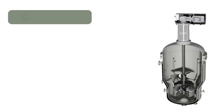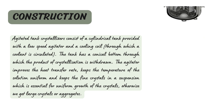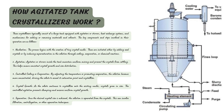Now let's look at the construction of the ATC — the agitated tank crystallizer. Think of it as a big cylinder with a mixture inside. There is a slow-spinning agitator that stirs everything up, like mixing cake batter. There is also a cooling coil, and at the bottom it is shaped like an ice cream cone where the crystals come out. The agitator improves heat transfer by keeping the temperature uniform and keeps fine crystals in suspension, which is essential for uniform crystal growth — otherwise large crystals or aggregates can form.